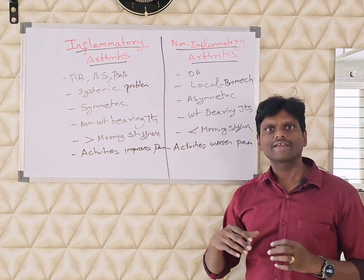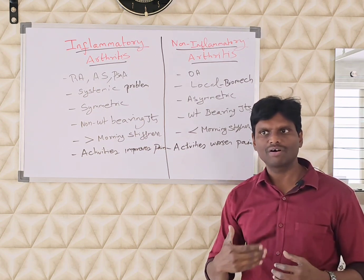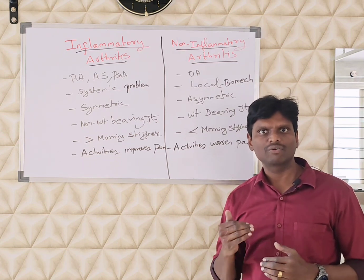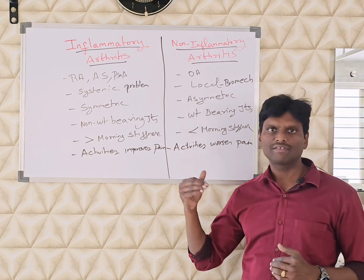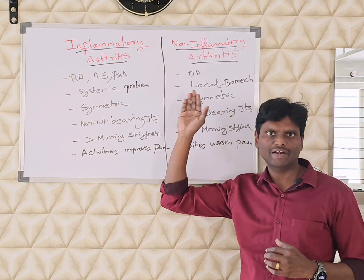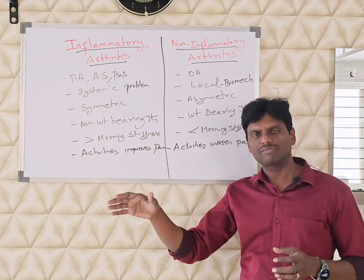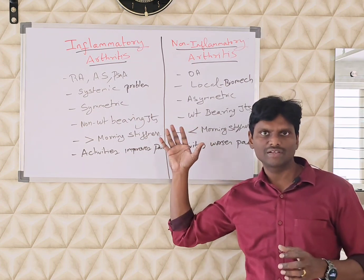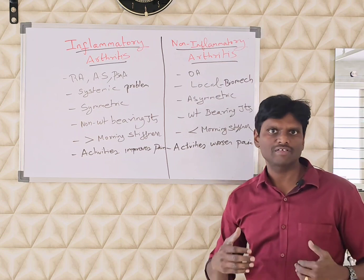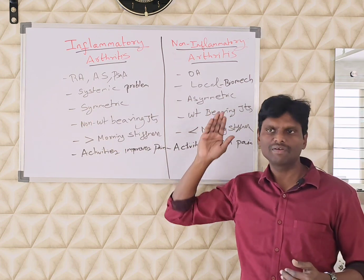Deformities can happen very quickly in the inflammatory category. Some patients ignore their inflammatory pain, undergo wrong treatment, or wait and watch, and the inflammation gradually erodes the joint, leading to rapid deformity — sometimes within one and a half to three years. Whereas in osteoarthritic or mechanical arthritis, deformities progress gradually over 10 to 15 years, such as genu valgum or varum slowly worsening over time.